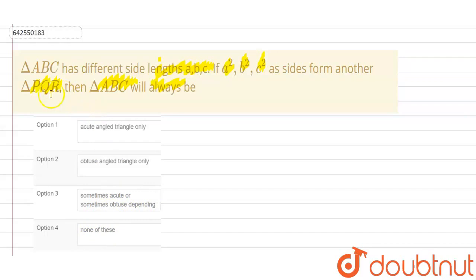So let us solve this question. First of all, we are given the sides of Triangle ABC. These are A, B, C. And for Triangle PQR, these sides are A square, B square, C square.